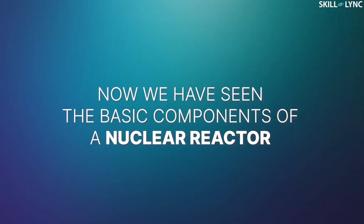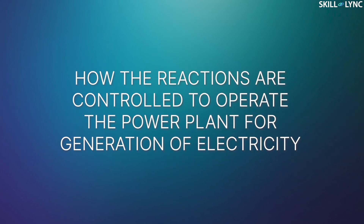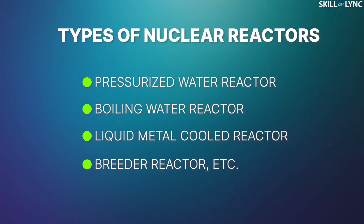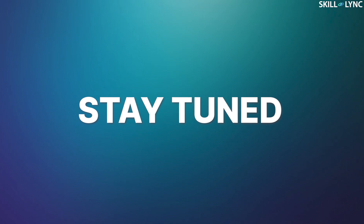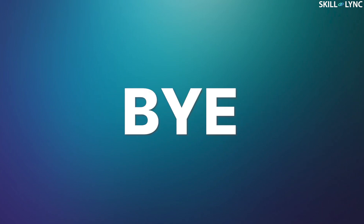Now, we have seen the basic components of a nuclear reactor and how the reactions are controlled to operate the power plant for generation of electricity. Depending on their mechanisms, nuclear reactors can be of various types. We will be discussing the types of nuclear reactors in detail in upcoming videos. So, stay tuned and until then, goodbye!